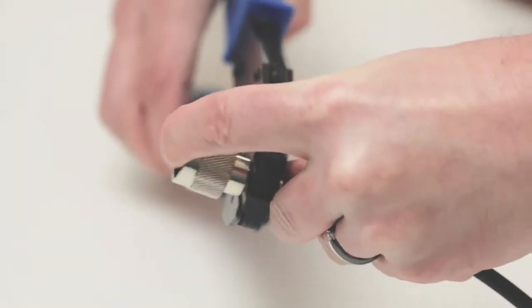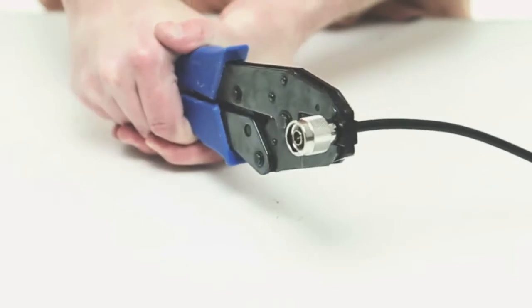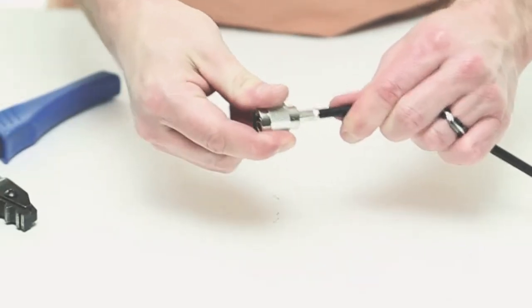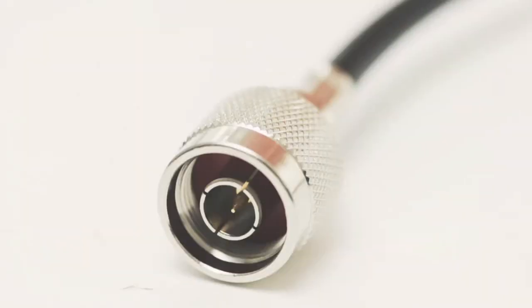With adequate pressure, crimp the ferrule onto the jacket. This pinches the ferrule and creates a secure connection. Give it a tug to make sure it's properly seated and you have successfully terminated an N-male connector.